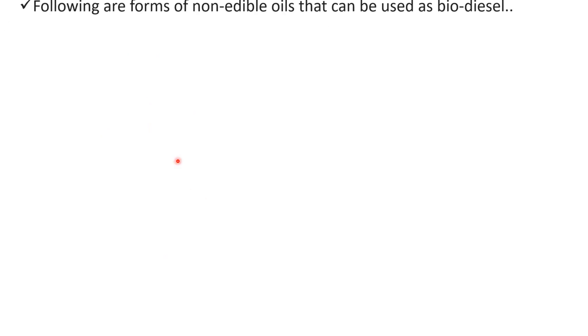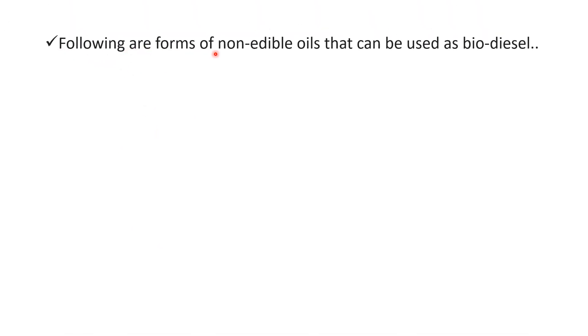Next question. Following are forms of non-edible oils that can be used as biodiesel. Option A jatropha, option B neem, option C palm and option D A and B. So over here right answer is option D A and B. Yani ki non-edible oil which is biodiesel ke roop mein utilize karte hai, to hum use karte hai jatropha and neem. So right answer is option D A and B.